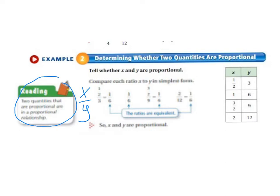And 1 over 6 is 1 sixth. And 3 halves divided by 9 equals 1 sixth. And 2 divided by 12 is 1 sixth.